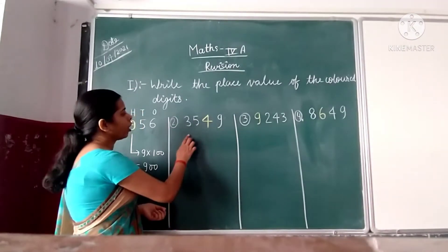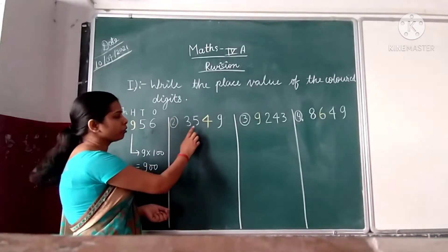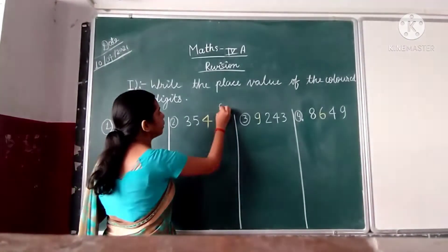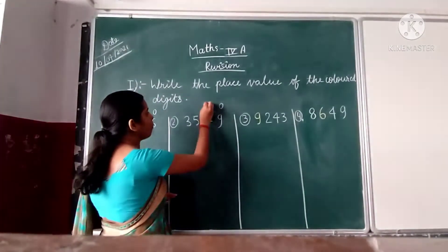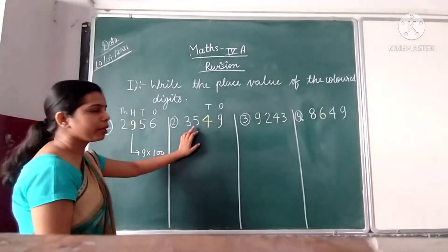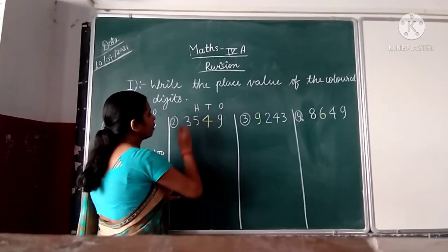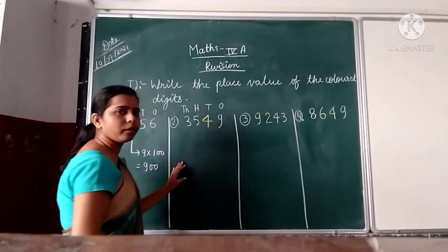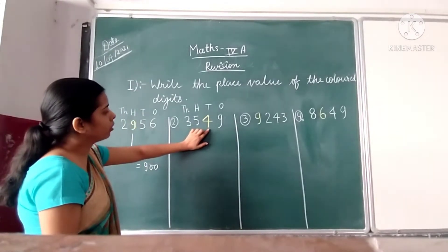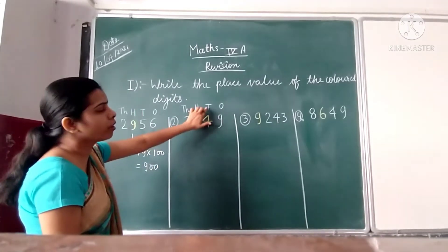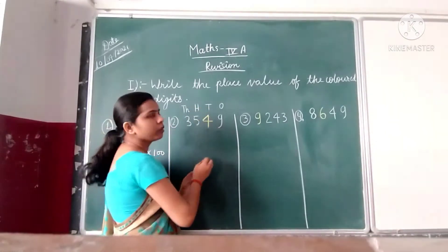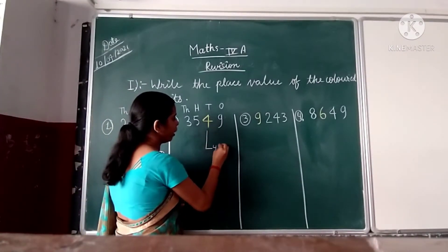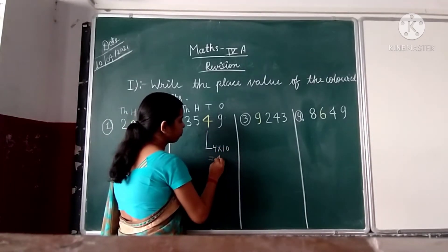In the next question: 3549. Digit 9 represents the value of 1. Digit 4 represents the value of 10. Digit 5 represents the value of 100, and digit 3 represents the value of 1000. In this question, the value of digit 4 represents the value of 10. That's why the place value of 4 is 4 into 10 equal to 40.